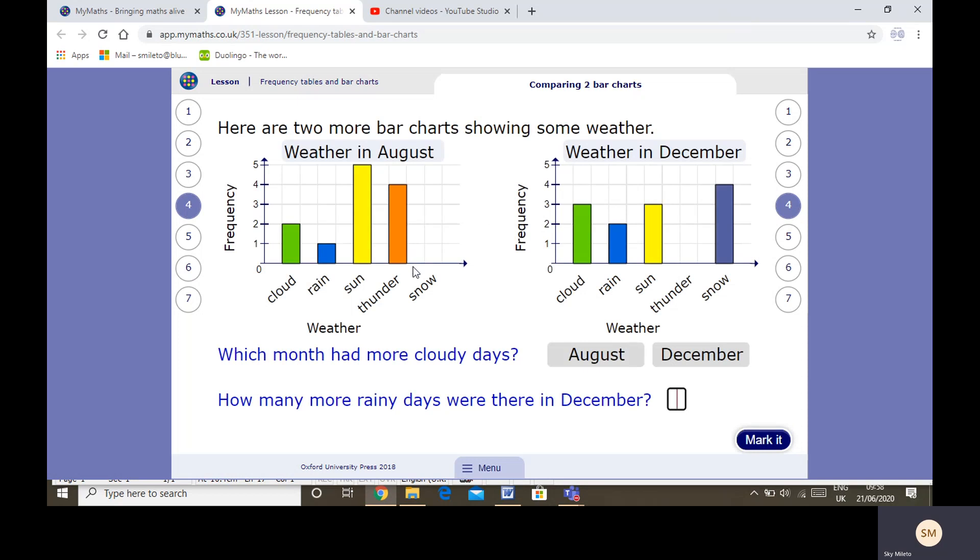Here are two more bar charts showing the weather in August and December. Which month had more cloudy days? So we need to look at cloud on both days. In August there were 2 days that were cloudy. In December there were 3 days that were cloudy. Therefore the weather was more cloudy in December. How many more rainy days were there in December? So in August rain there was one rainy day. In December there were 2 rainy days. So there was one more rainy day in December.